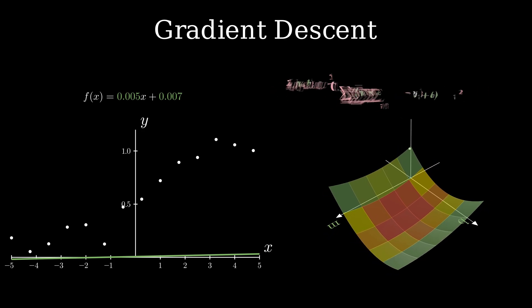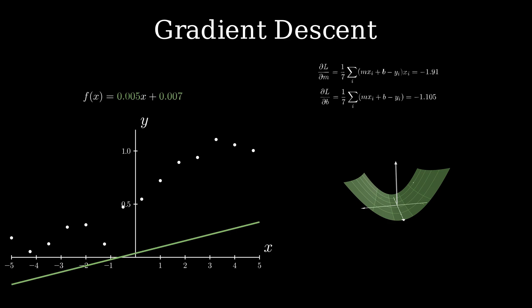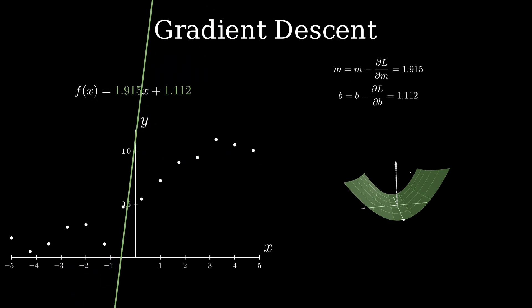It's quite easy to differentiate this function analytically which gives the direction in both m and b. Mathematically speaking, I should increase m by 1.91 and b by 1.105. Let's just do that. Wow, that just went straight through everything. You can even see the plot on the left side that has gotten worse.